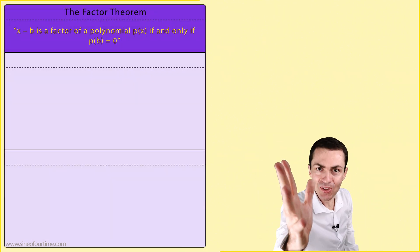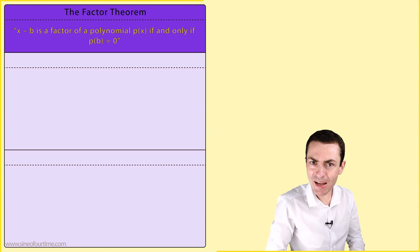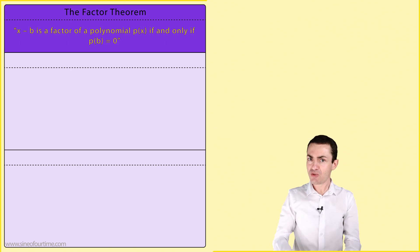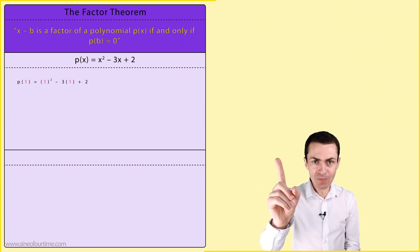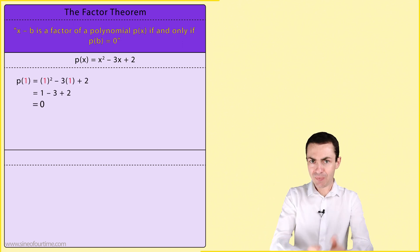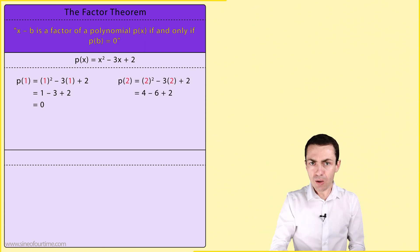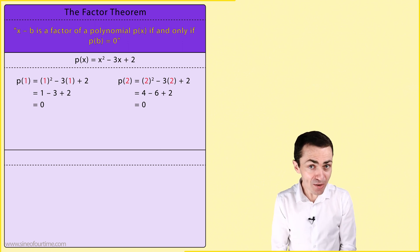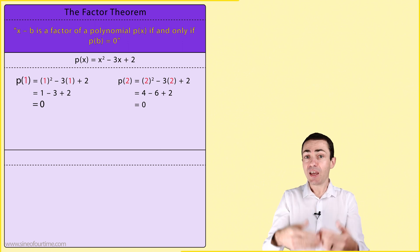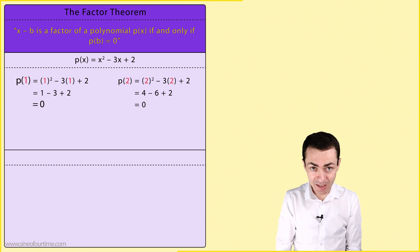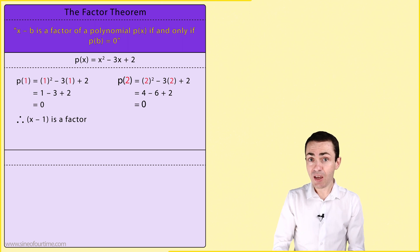Okay, let's put the factor theorem to the test by letting p(x) equal to that trinomial from earlier. If we substitute 1 in place of x, we get 0. And if we substitute 2 in place of x, we also get 0. From this we can conclude that since p(1) is equal to 0, x minus 1 must be a factor. And we can also conclude that since p(2) is equal to 0, x minus 2 is also a factor.